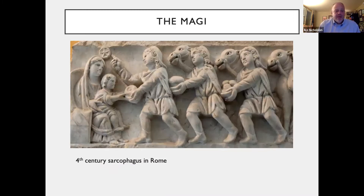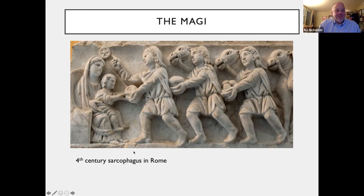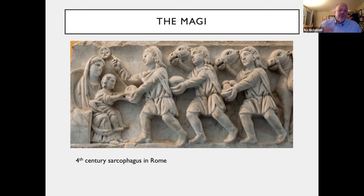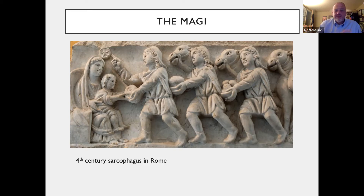Here is an example: a carving from a 4th-century sarcophagus in Rome — a real fancy casket — showing the Magi bringing tribute to the Christ child. Notice that the Christ child is also a child, not an infant or baby, which conveys that at least in the 4th century the church did not view the visitation of the Magi as happening on Christmas or on the day of the Nativity, but as an event that occurred sometime later. The oldest depictions around what we consider the Christmas story show the Magi visiting a child who is able to sit up and in many cases receive gifts.